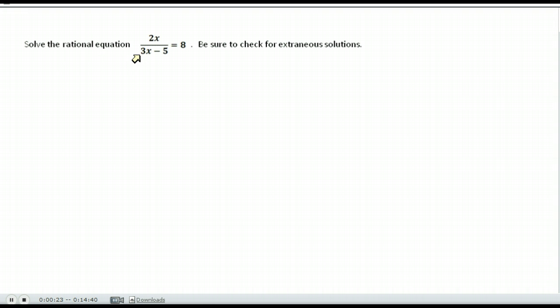In order to solve a rational equation, you first want to check if there's more than one fraction, and factor each of the denominators. In this case we only have one fraction, so we're going to multiply both sides of the equation by that denominator so that we can clear it out.